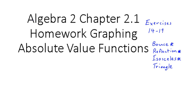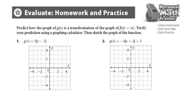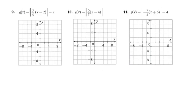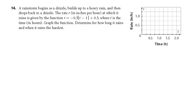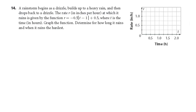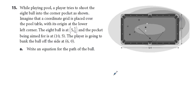I'm going to do the odd number problems in the set from 14 to 19. So I'm going to skip 14 and go to 15. We have the diagram of a pool table here, and this can be a bounce.